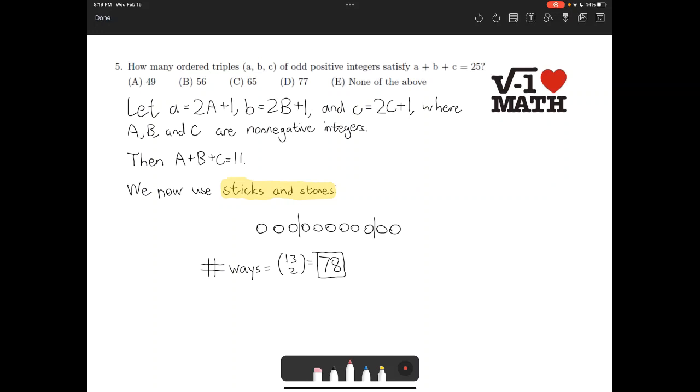For problem number 5, we wish to find the number of ordered triples of odd positive integers such that a plus b plus c equals 25. Now odd positive integers, in particular, the odd part is going to be kind of problematic. So we simplify this condition.